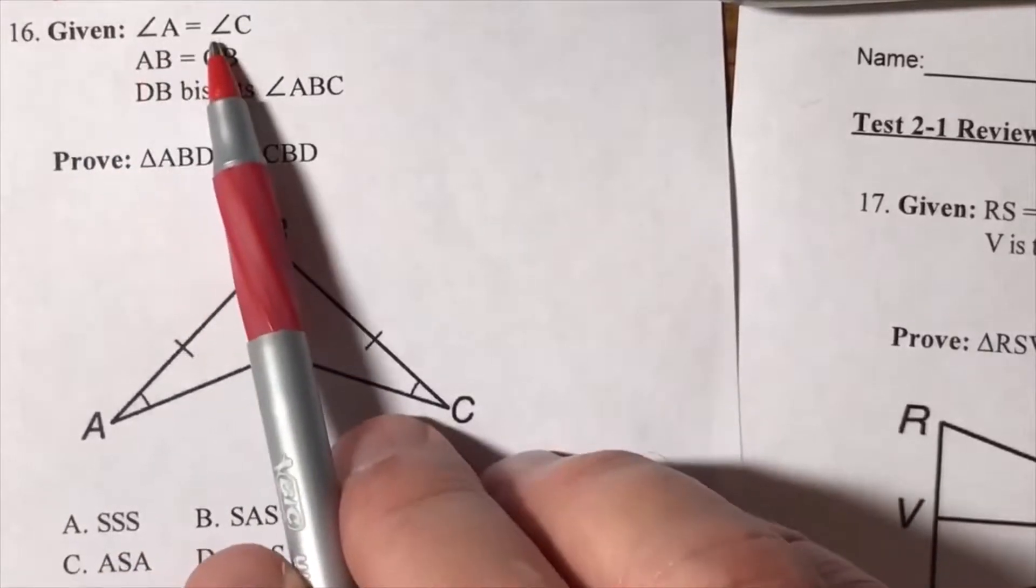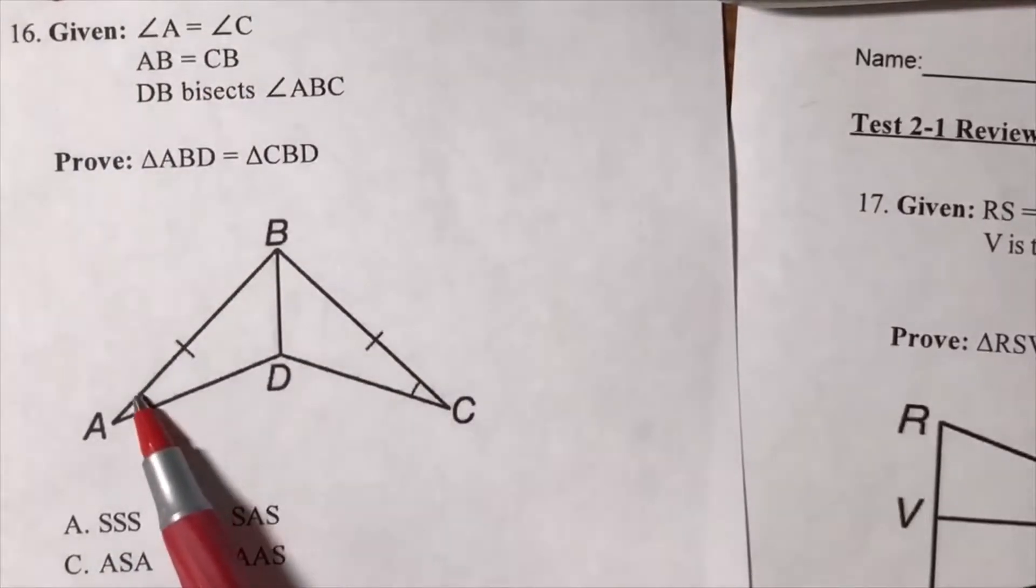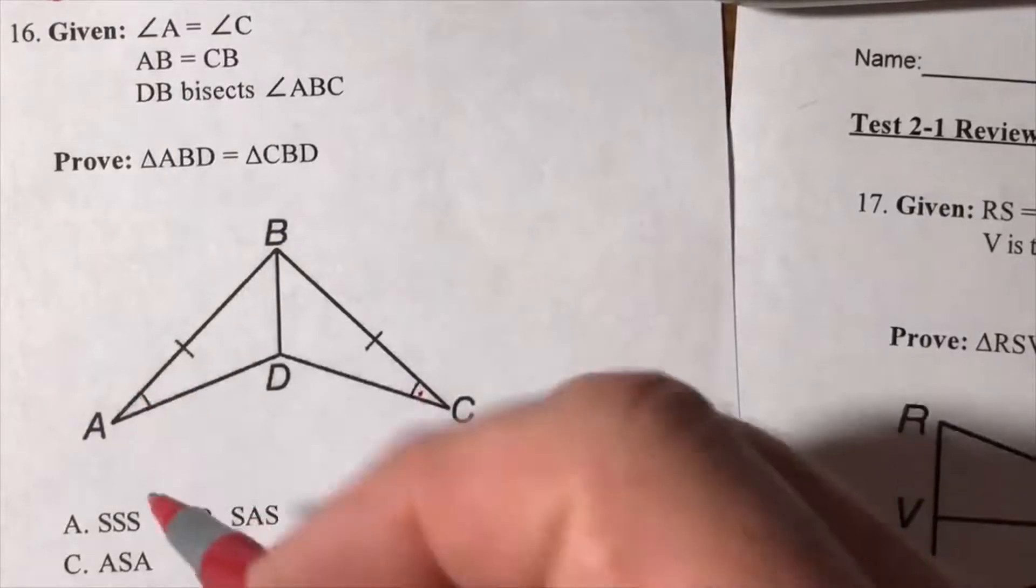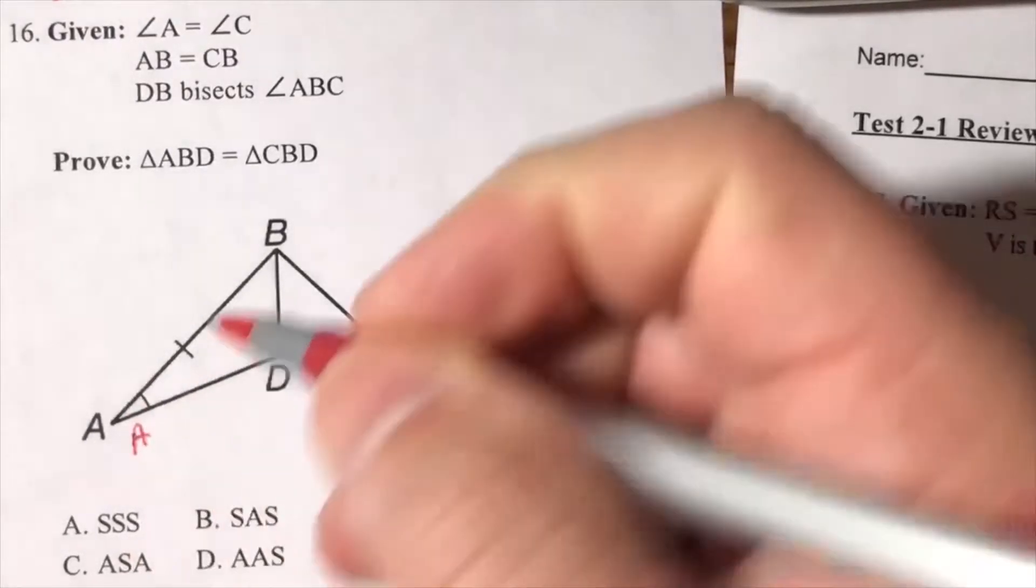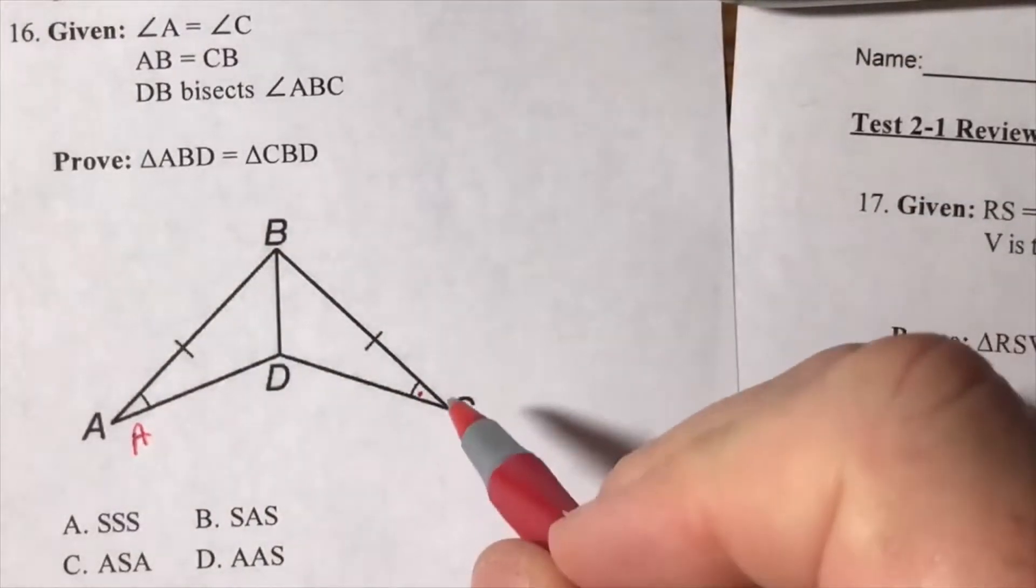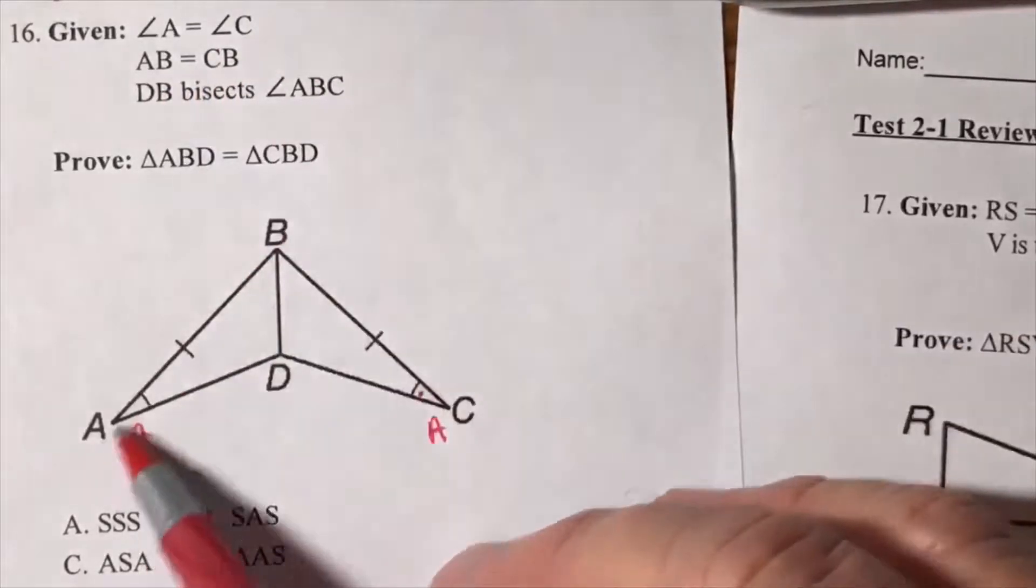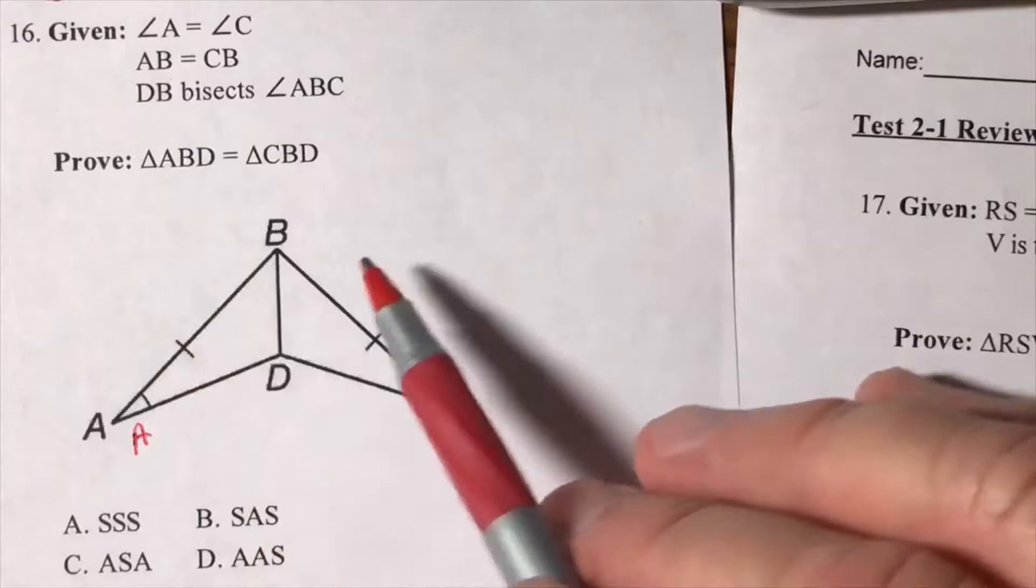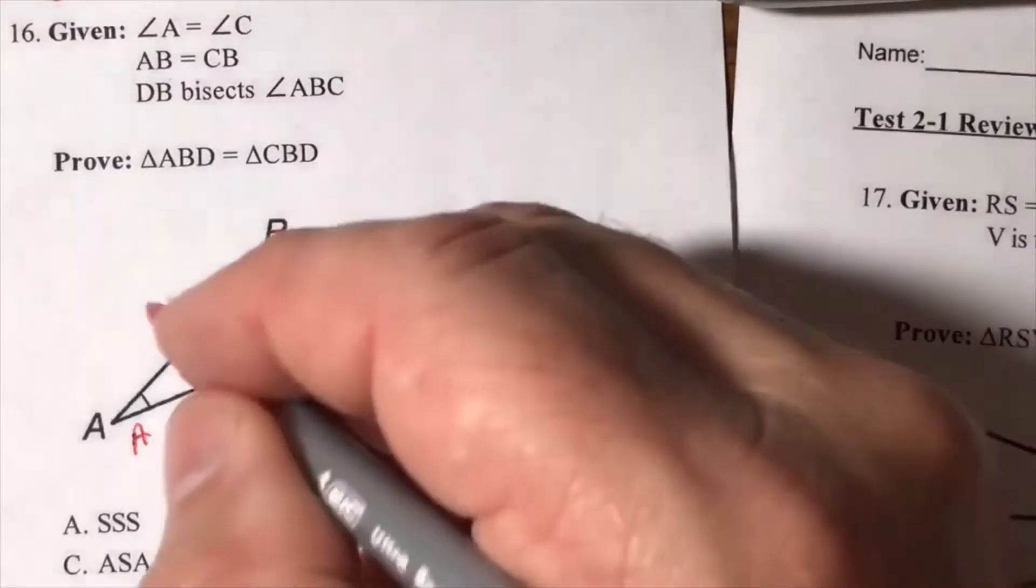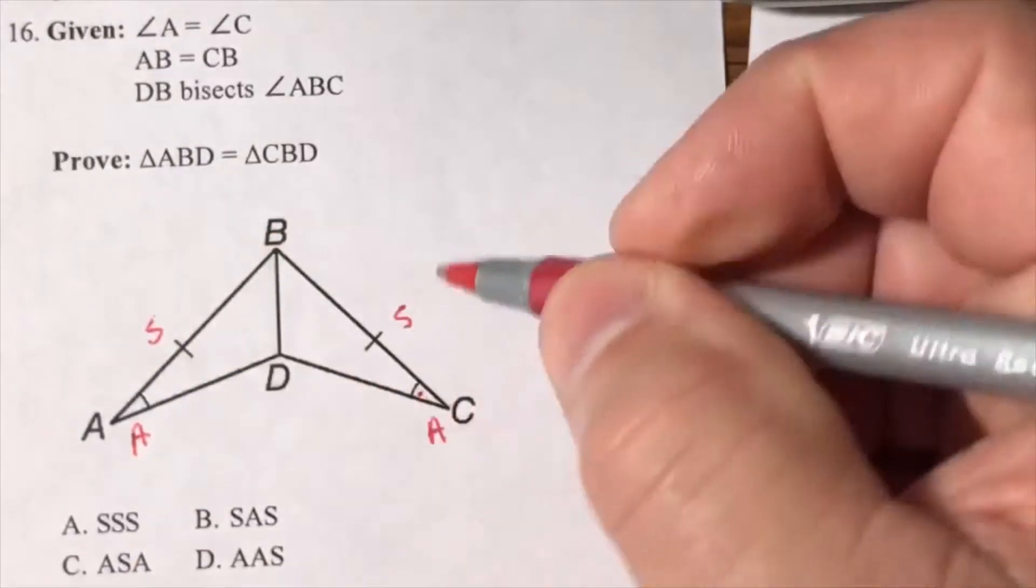We're given that angle A is equal to angle C. Let's go to the diagram - we've got an arc and an arc, so we can mark an angle here and an angle here. AB equals CB - AB, mark it between those, BC. All right, so there's my S and my S.